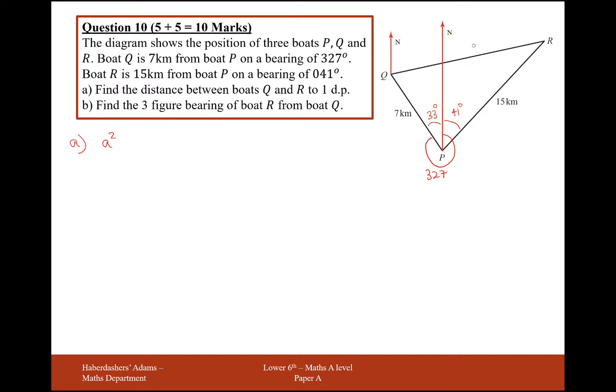So A squared, we're going to label this side as A equals B squared. We're going to label this side as B. B and C can be interchanged. A has to be the one at the top. C is going to be this side here, so it's plus C squared minus 2BC cos of capital A. And capital A, if this is little a over here, capital A is this angle here.